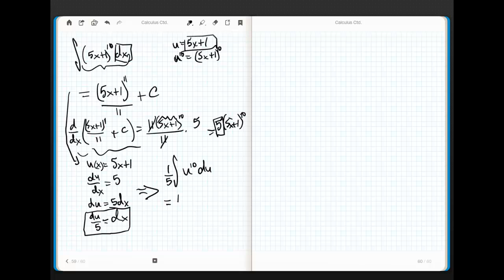It's along for the ride. Now, watch what happens. This is equal to 1 fifth u to the 11th plus c. Look at how much easier that was. Could you imagine? Think about this. What if I told you that you had to multiply this thing out using Pascal's triangle or some other mnemonic device?